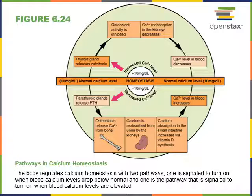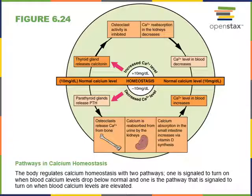However, if calcium concentration in the blood is too high — above the homeostatic set point — then the thyroid gland will respond by producing calcitonin. Calcitonin is a hormone that inhibits the activity of osteoclasts but stimulates the activity of osteoblasts, the cells that store calcium in the bone. Calcitonin also decreases the reabsorption of calcium by the kidneys, meaning more calcium is lost in the urine, working to lower blood calcium concentration back to the homeostatic set point.